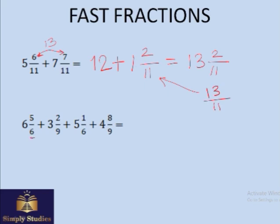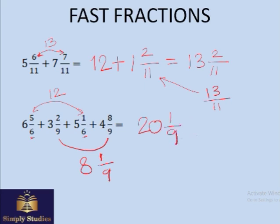Let's do this one. The denominator is the same, so these two can be added: 6 plus 5 is 11, and the fractional part makes it 12. Then 3 plus 4 is 7, but 2 plus 8 is 10, not 9 — it exceeds the denominator. So we add one more whole, making 7 become 8, and 1/9 is left. The end result is 20 whole 1/9.